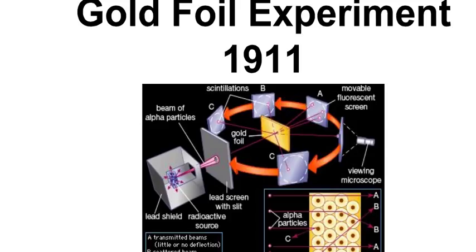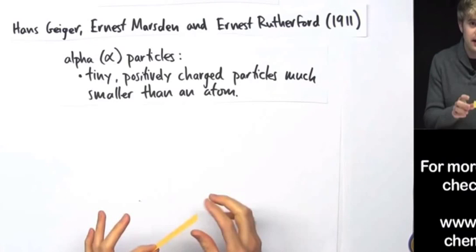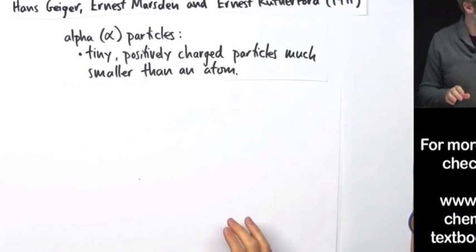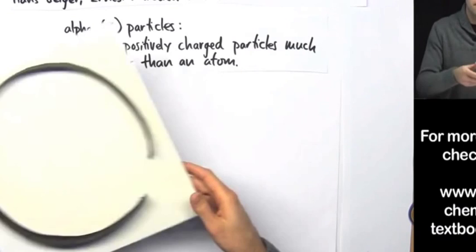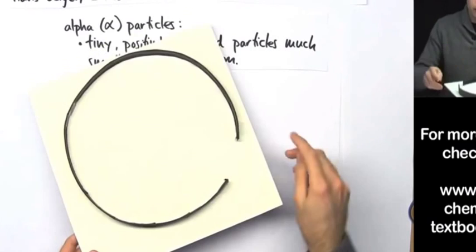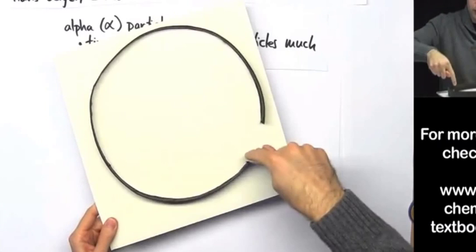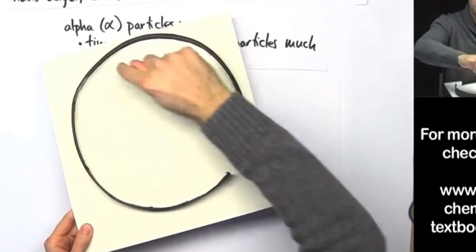And here is a better explanation of the experiment. They take a material that flashes when it gets hit by alpha particles, and they bend it around into a circle like this. So wherever the alpha particles hit, they'll see a flash.